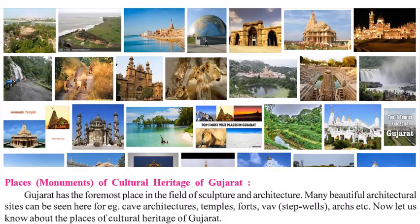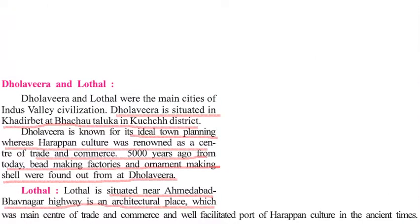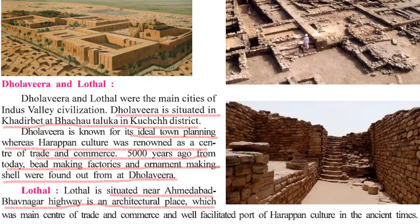Now we will move forward to the heritage and historical places of Gujarat specifically — cave architectures, temples, forts, step wells, arches, and more. Starting with the ancient towns of Dholavira and Lothal, these were the main cities of the Indus Valley Civilization. Dholavira is situated in Khadir Bet in the Bhachau taluka of Kutch district. These towns have been renowned for their town planning, sewers, roads, cleanliness, and trade since 5,000 years ago. Lothal is situated near the Ahmedabad-Bhavnagar highway and was the main center of trade and a well-facilitated port of Harappan culture.